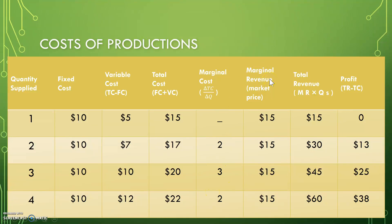Marginal revenue, which is what we'll be talking about today, is that market price or equilibrium point. It doesn't matter how much is produced — this is how much the consumer is willing to pay for that good. Total revenue is marginal revenue times quantity supplied, and profit is total revenue minus your total cost.